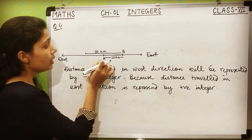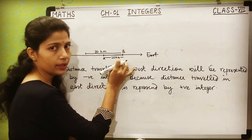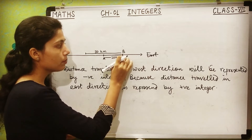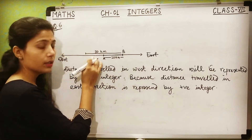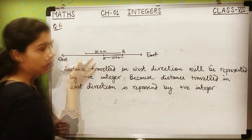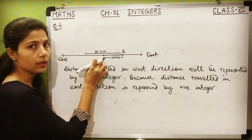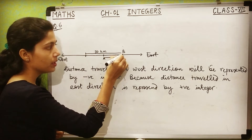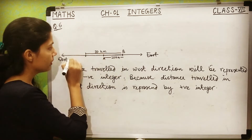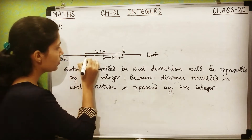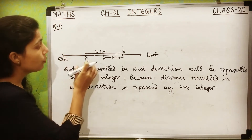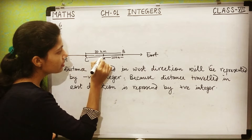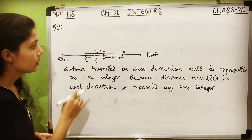Now the next part: if Rita goes from A to B, that is 20 km in the east direction, and then from B she goes 30 km in the west direction on the same road — what will her final position from A be? Suppose she reaches point C. From point B, after travelling 30 km in the west direction, she reaches C. Now you have to find the distance from point A — that is, her final position from A.